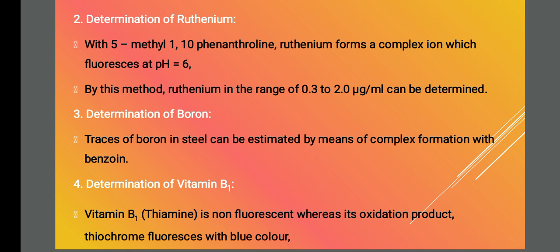The next application is vitamin B1, which is called thiamine. Vitamin B1 is a non-fluorescent substance, but its oxidation product — thiochrome — fluoresces with a blue color. This property is used for the determination of vitamin B1 in food samples like meat and cereals. The oxidation product gives a blue color, and using that we can find the presence of vitamin B1 in various food samples.